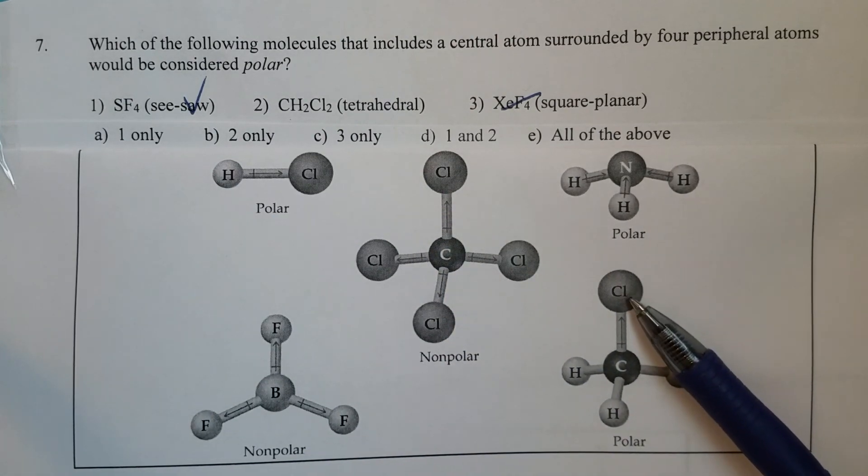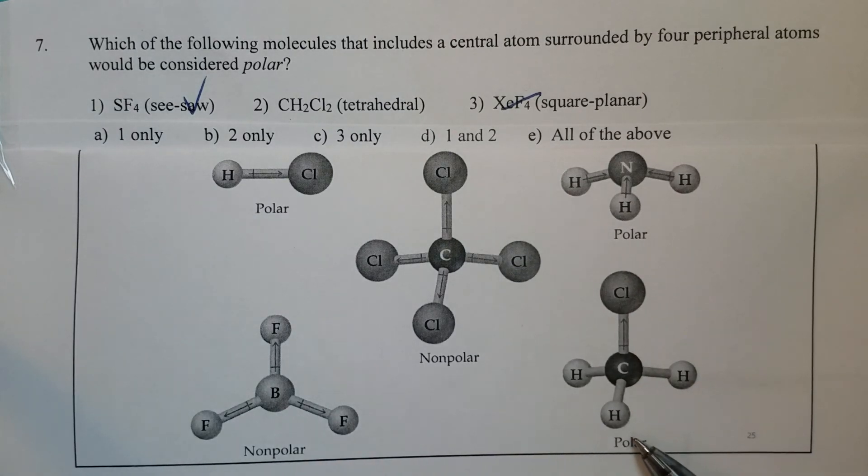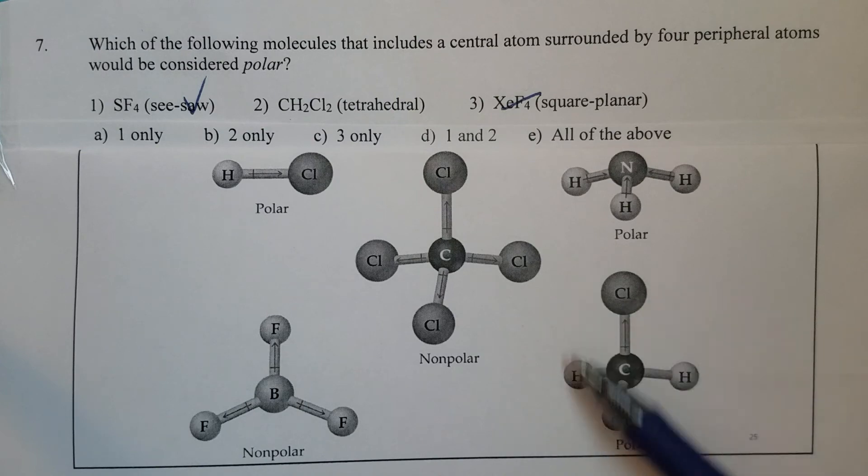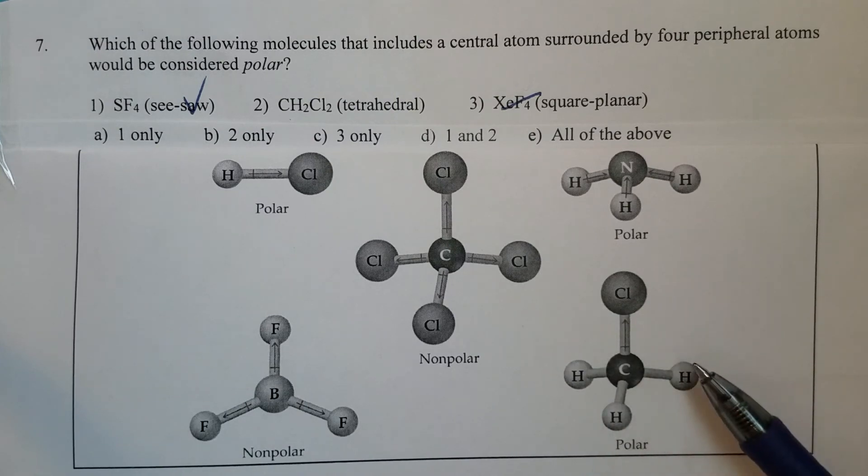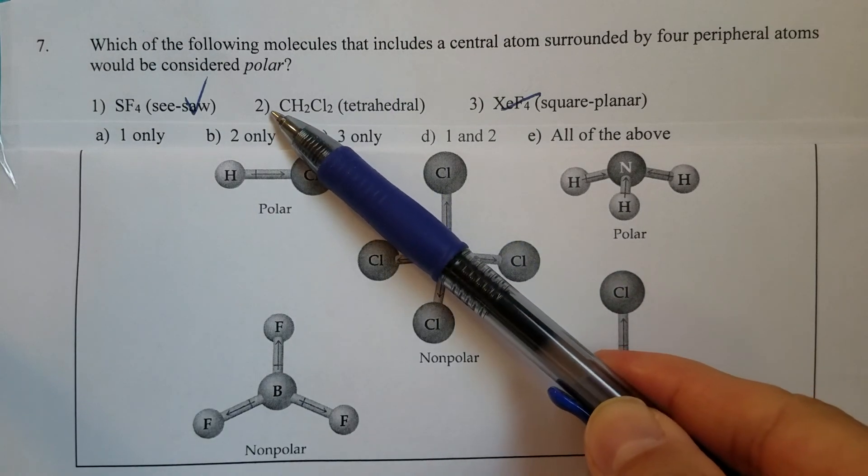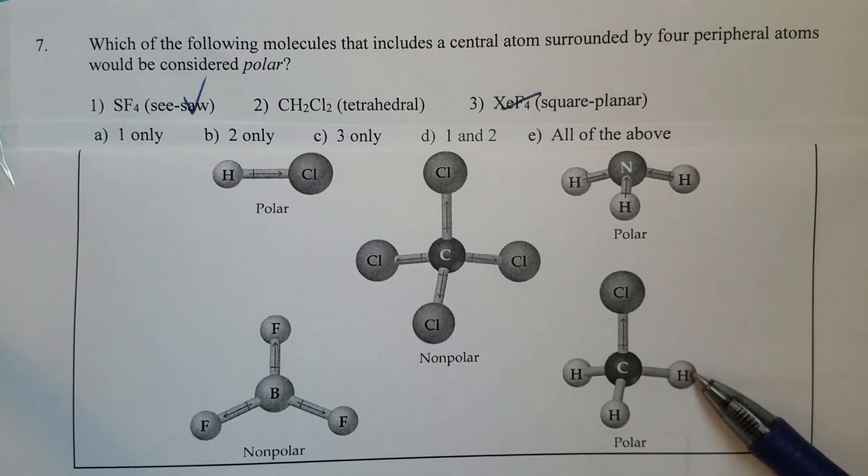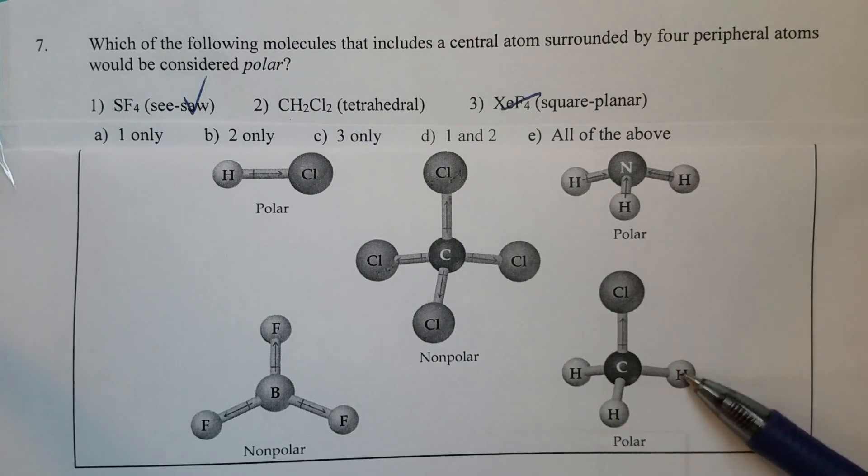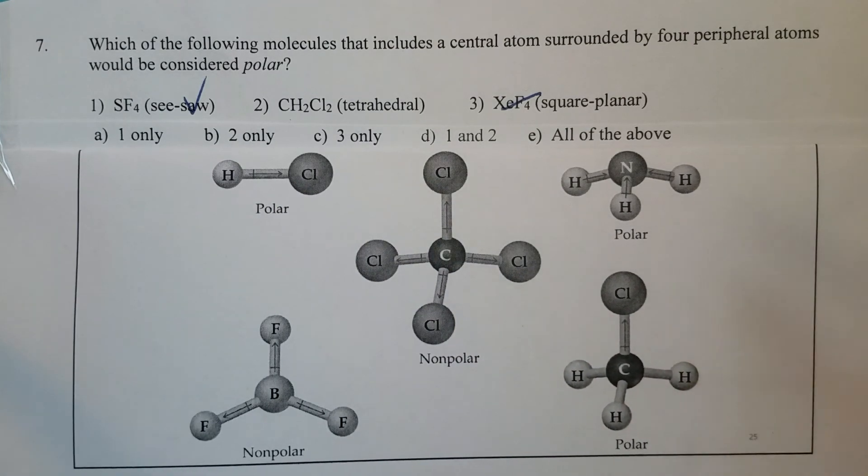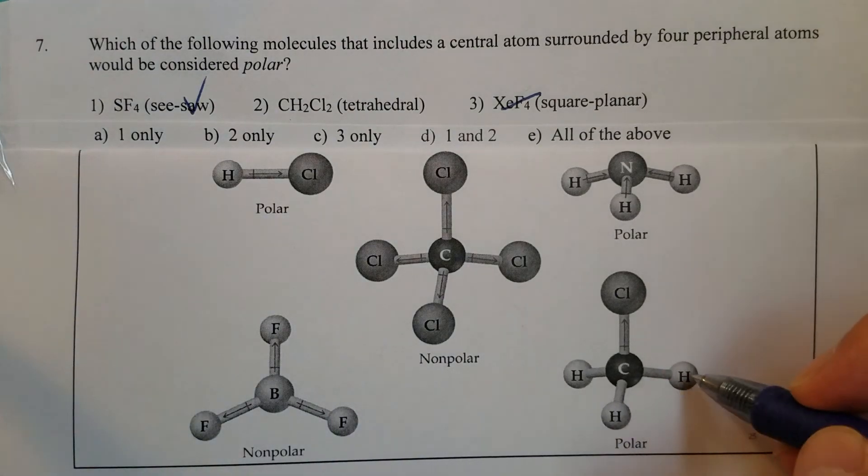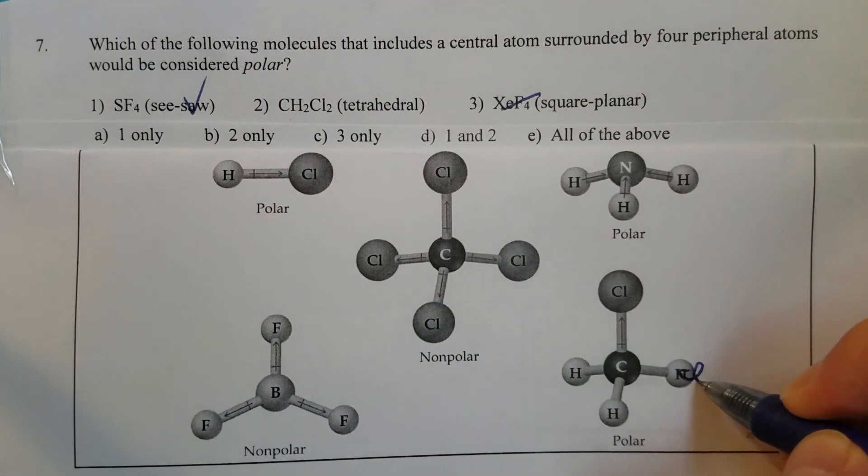But in this case, even though with one chlorine atom, that's polar. Because overall, the molecule has a polarity. And in this question right here, there are two. We can consider there's another chlorine right here, so a little bit larger.